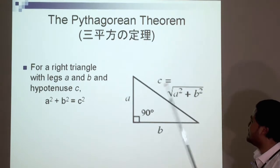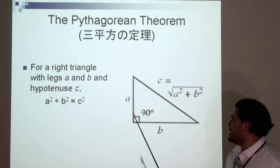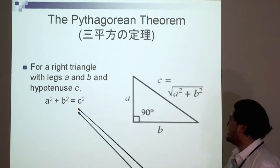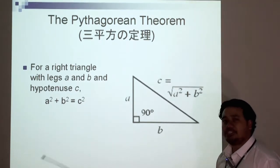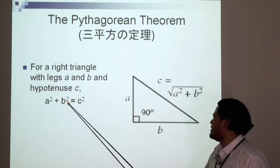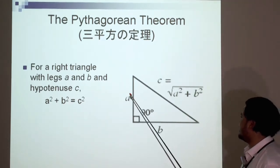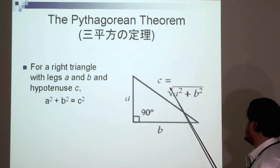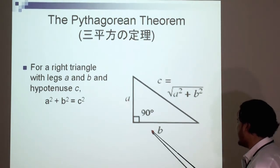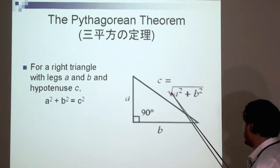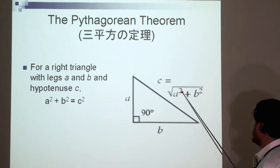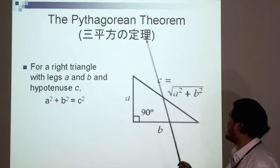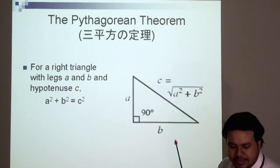And moving on, the Pythagorean theorem. For a right angle triangle with legs A, B, and hypotenuse C, this is one of the most popular equations in math. A squared plus B squared is equal to C squared. So if that is A and if that is B, then C is equal to the square root of A squared plus B squared. There's a lot of applications in this Pythagorean theorem.